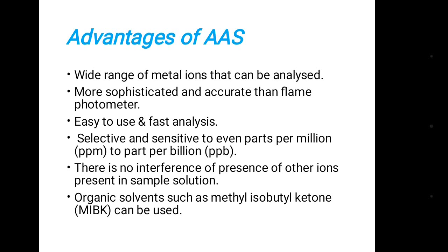Advantages of the AAS instrument: it has a wide range of metal ions that can be analyzed; it is more sophisticated and accurate than a flame photometer; it is easy to use and allows fast analysis; it is selective and sensitive to even parts per million to parts per billion levels; there is no interference from other ions present in the sample solution; and organic solvents such as methyl isobutyl ketone (MIBK) can also be used.